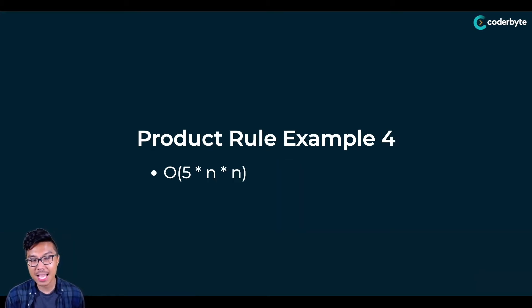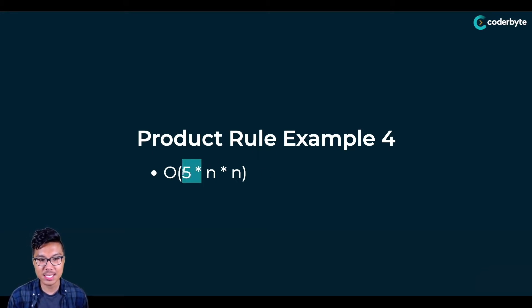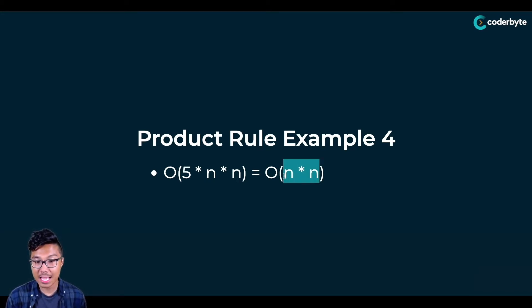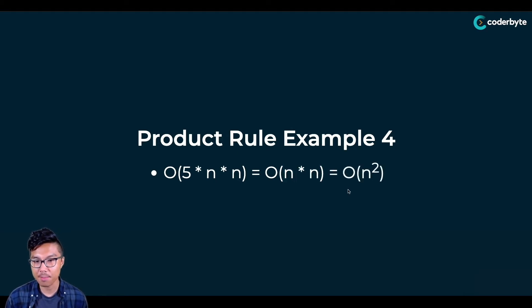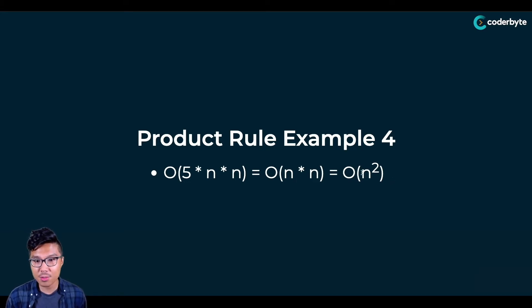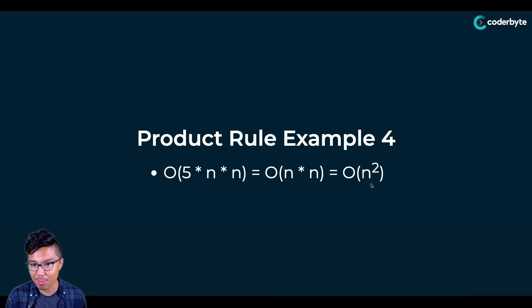Let's say I gave you five times n times n. You should immediately recognize that you can drop the five. Then you can't simplify further — you have to keep both of these n's. If you're familiar with simple math, whenever you have a variable multiplied by a variable, that variable is raised to the second power. So we say O of n squared. In n squared, the two is not a constant I can drop — I'm not multiplying by two, I'm raising n to the second power. n squared means n times n, and I can't get rid of either of those n's.